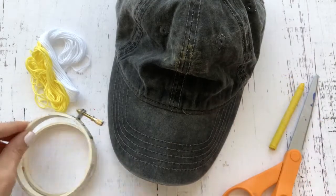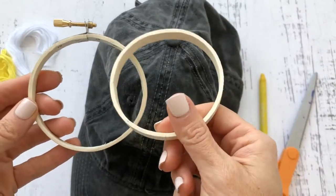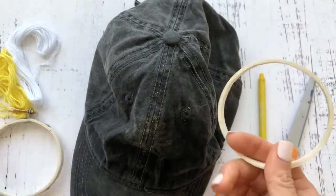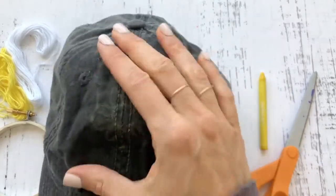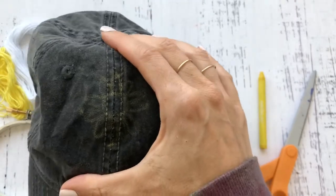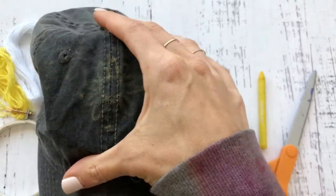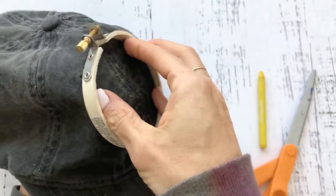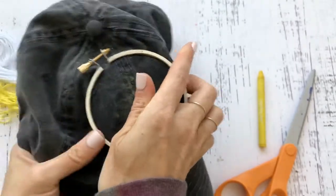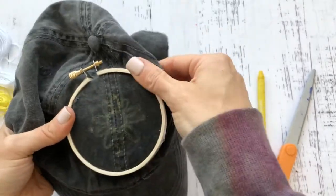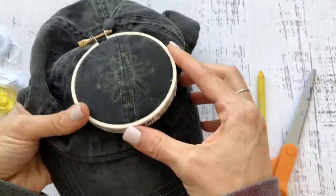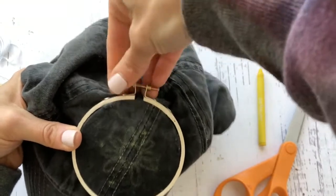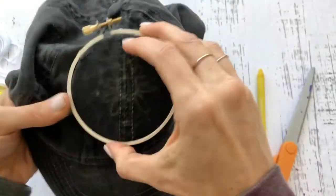I'm gonna start by stitching the middle. Take apart your embroidery hoop. The one without the screw goes inside the hat, and the one with the screw goes on the outside. This really helps to stabilize your fabric. It's tricky putting it on a hat that's not flat fabric. Might take a couple tries to get it right. Push it through, tug around to make sure it's super flush, then tighten your screw.